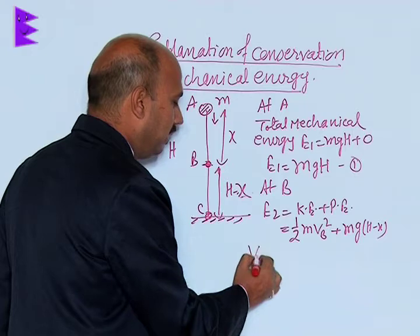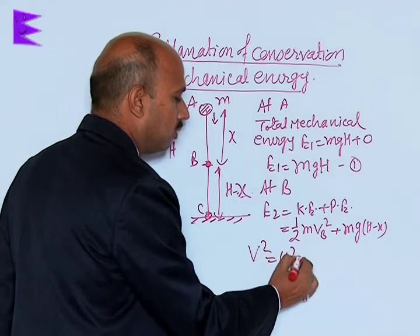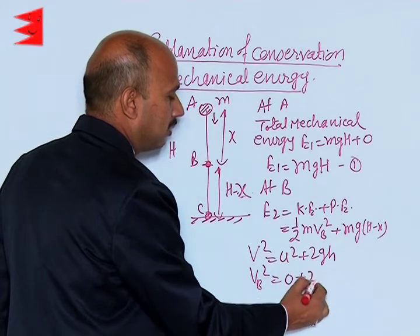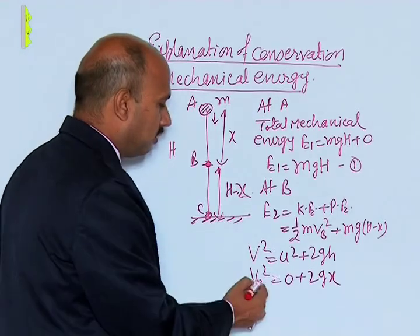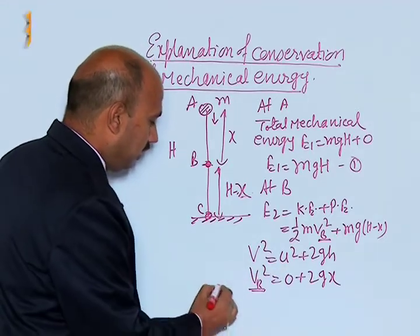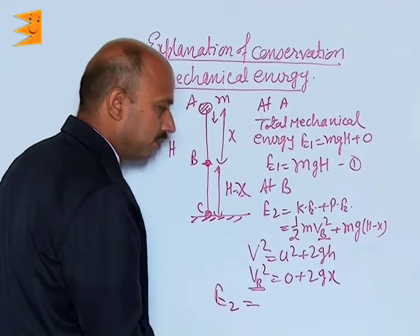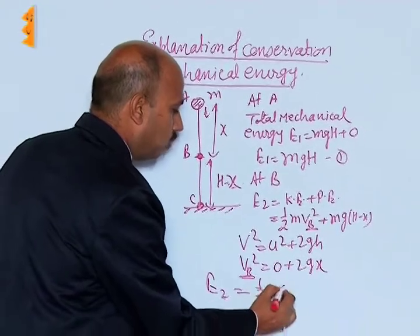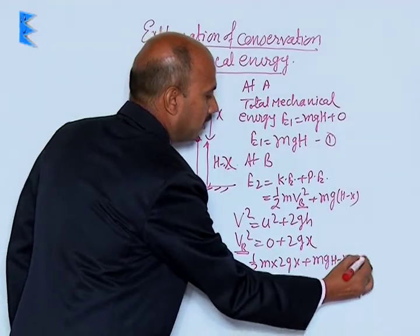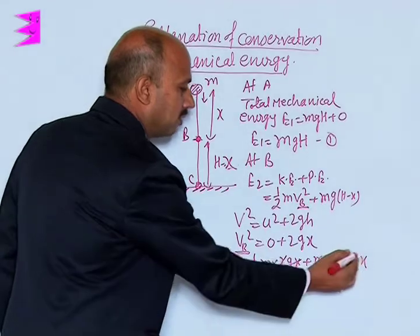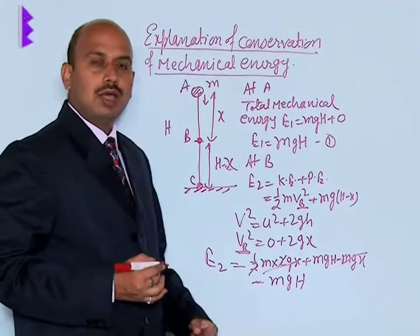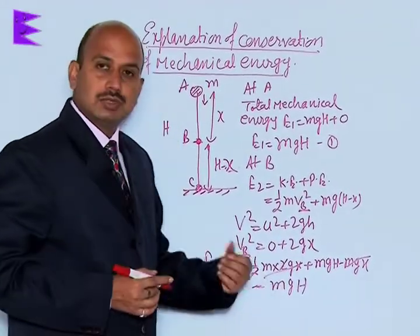We apply the formula v squared equals u squared plus 2gs. So v_b squared equals 0 plus 2gx. Substituting into E2: E2 equals half m times 2gx plus mg(h minus x), which simplifies — the mgx terms cancel — giving E2 equals mgh. So total energy at B is also mgh.